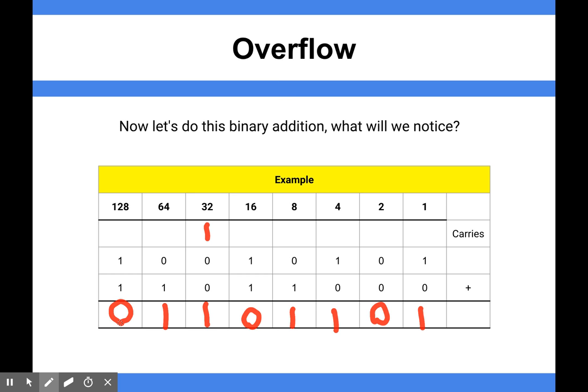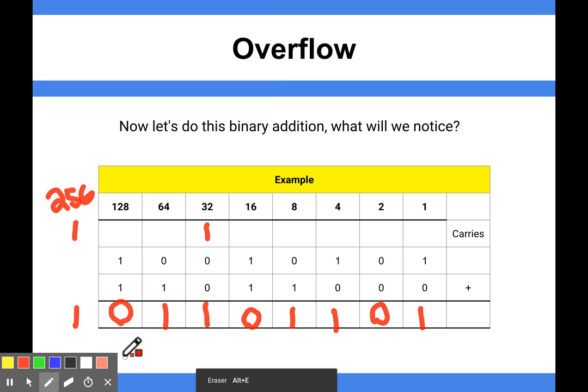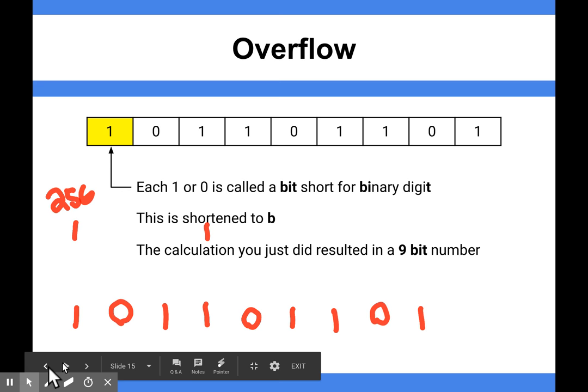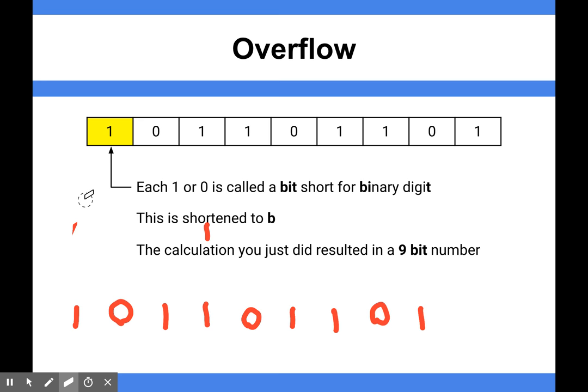So this column would be worth 256 if we kept going up in binary, because it's times 2. But what's actually happened—I'm going to click it back—what's actually happened is we've ended up using an extra bit.